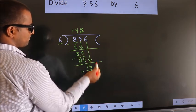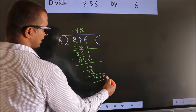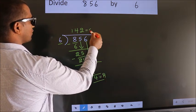No more numbers to bring it down, so we stop here. This is our remainder. This is our quotient.